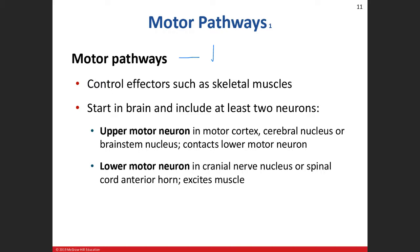That was sensory information, which is ascending - it goes up to the brain. Motor pathways are descending. They start in the brain and head down into the spinal cord, and out of the spinal cord to the periphery.